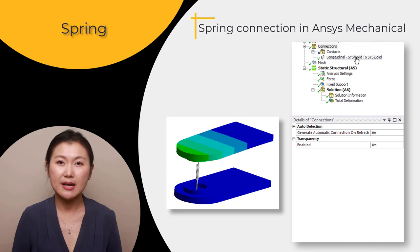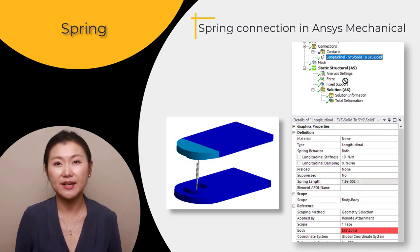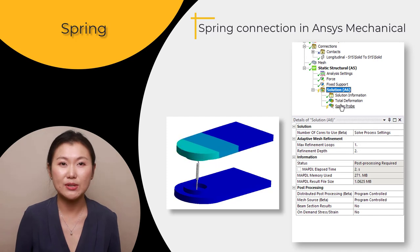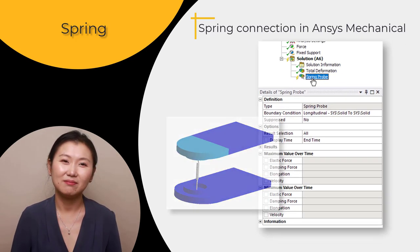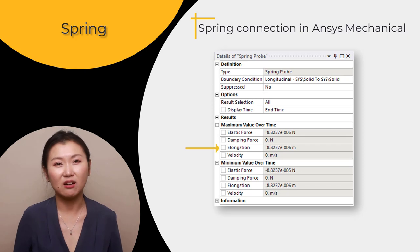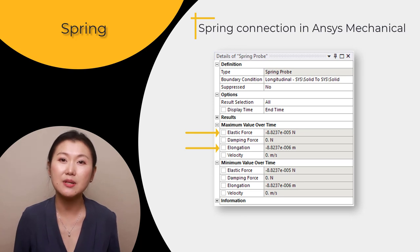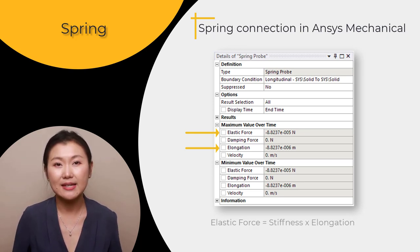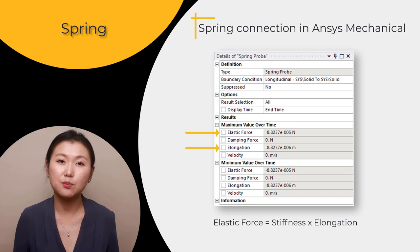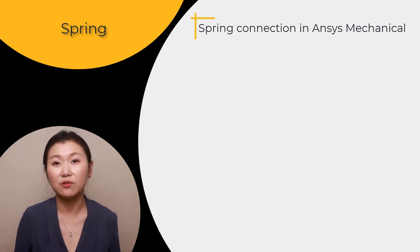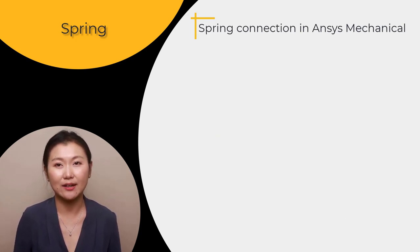Here is a quick tip: simply drag and drop the spring connection onto the results tree, and this will automatically add a spring probe result. In addition to the spring elongation, you can also get the elastic force acting along the length of the spring from the same spring probe result. This elastic force is a product of spring stiffness and elongation. The work-through session will further help you understand how to create and use the spring connection in ANSYS Mechanical.